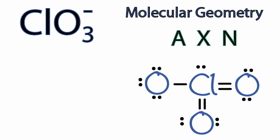X, that's going to be the number of atoms bonded to that chlorine atom, we have three of those. And then N, that's the non-bonding electrons, or the lone pair of electrons there, and we only have one pair of those.